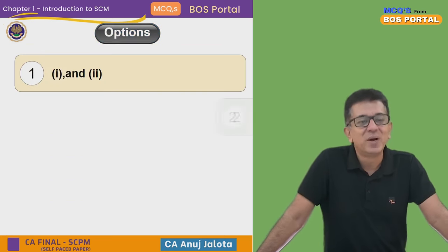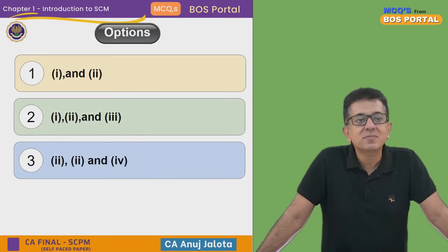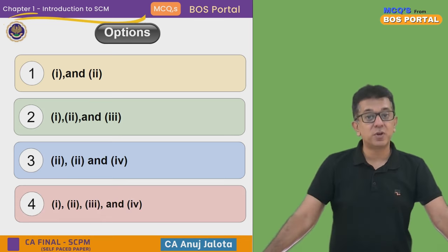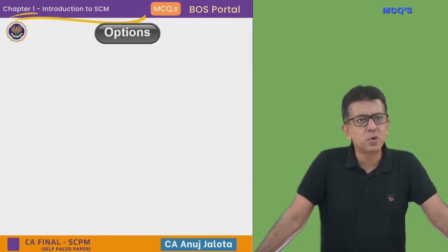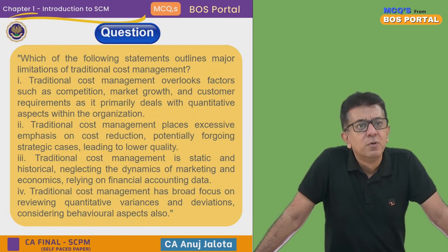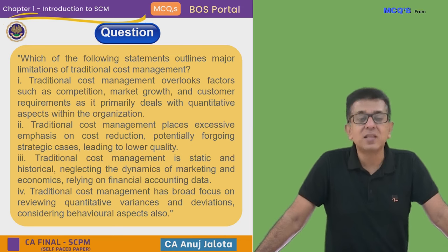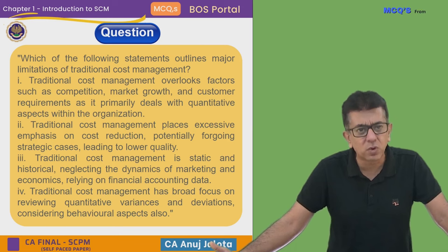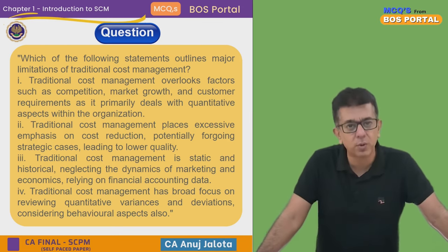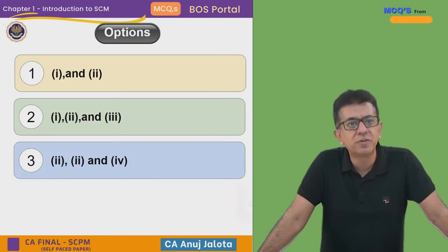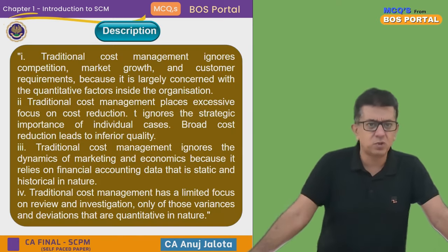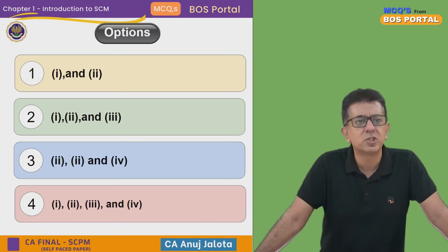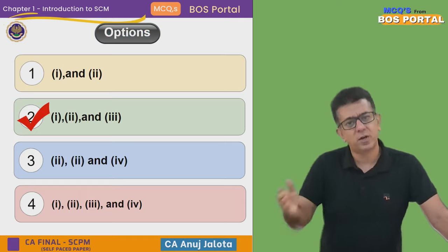Looking at the four options: one and two; one, two, and three; two, three, and four; or four alone. Statements one, two, and three are all genuine limitations of traditional cost management, while statement four is false. Therefore, the correct answer is option two — one, two, and three.